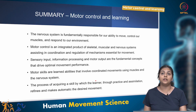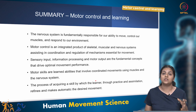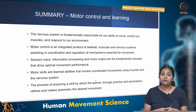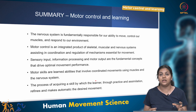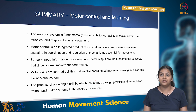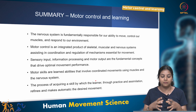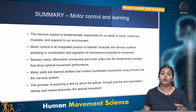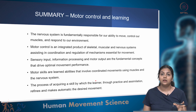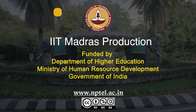To wrap up: the nervous system is fundamentally responsible for our ability to move, control our muscles and respond to our environment. Motor control is an integrated product of the skeletal, muscular and nervous systems, assisting in coordinating and regulating movement. The fundamental concepts of sensory input, information processing and motor output drive optimal movement performance. Motor skills are learned abilities involving coordinated movements, and motor learning is the process by which a learner through practice and assimilation refines and makes automatic the desired movement.